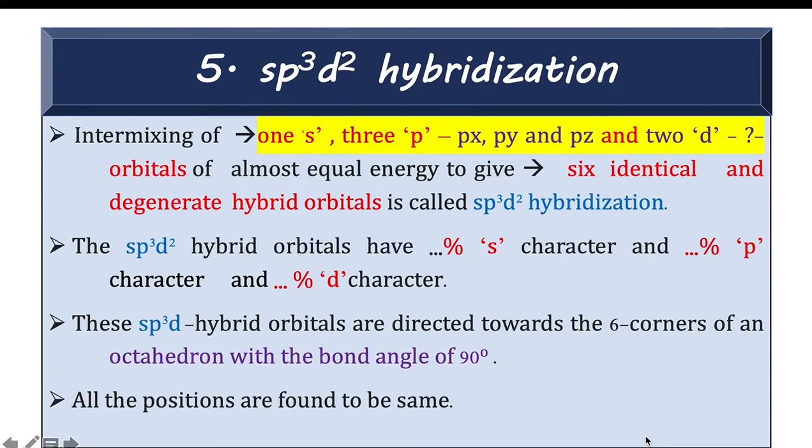Hello everyone. So now let us take the 5th type that is sp³d² hybridization. sp³d² hybrid orbitals are formed by the intermixing of 1s, 3p orbitals and 2d orbitals.